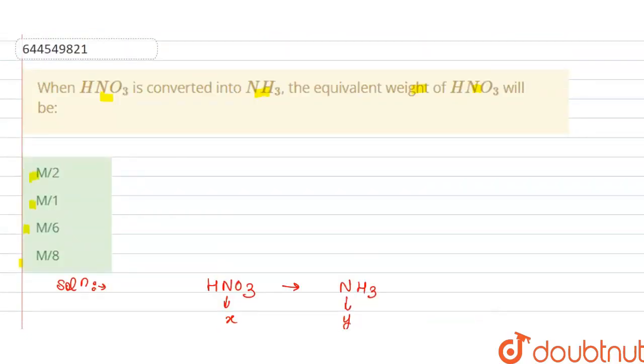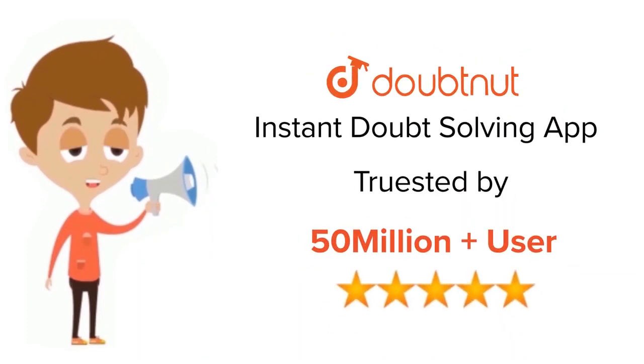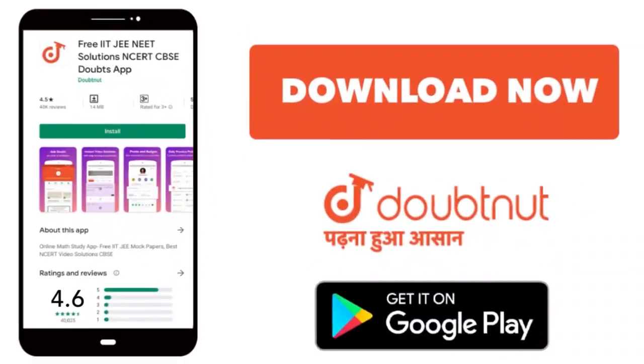So from this we can say that option D is correct. Thank you. For class six to twelfth, IIT-JEE and NEET level, trusted by more than five crore students, download Doubtnet app today.